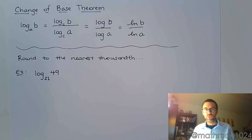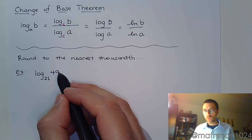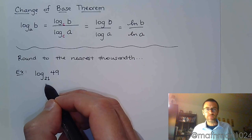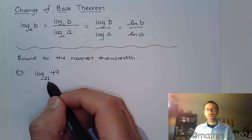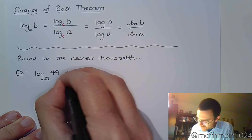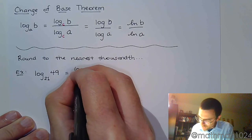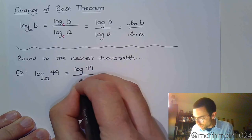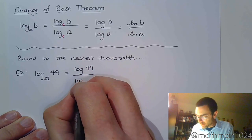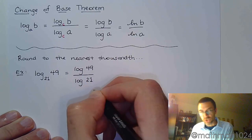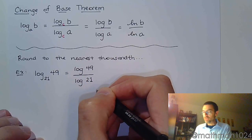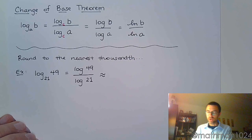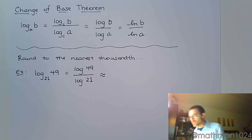But we can't write these with the same base. I mean, this is 7 squared, but that's 7 times 3, and it's not going to do us any good. But what we can do is we can rewrite this. And I can say, as long as I can evaluate log of 49 over log of 21 as this direct application of the change of base theorem, I'm going to be okay. And so we can type this into our calculator and come up with our approximation rounding to the nearest thousandth.